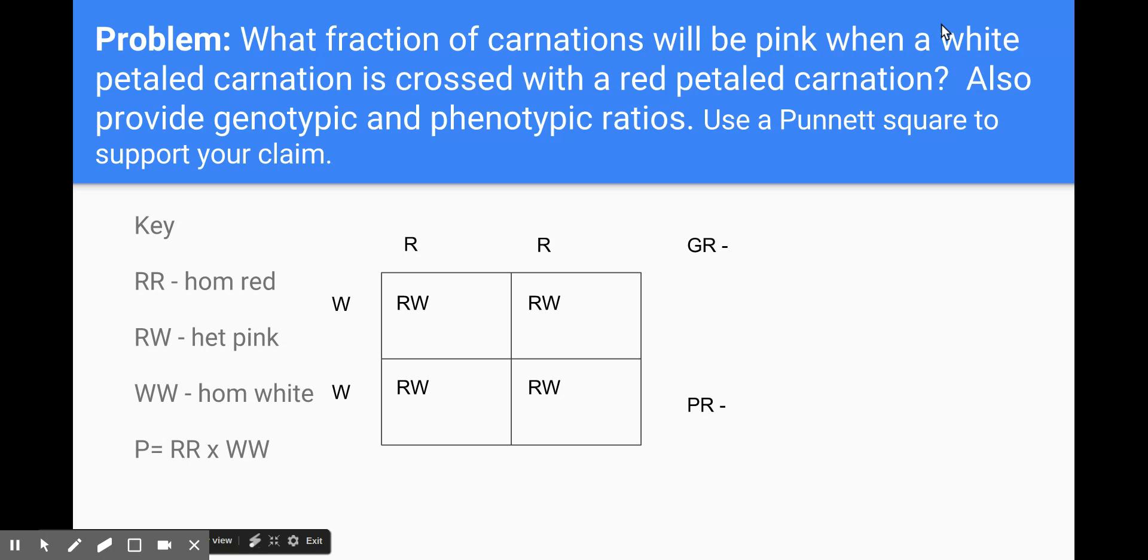Okay here we are with the next slide and a new question. This last question is what fraction of carnations will be pink when a white petaled carnation is crossed with a red petaled carnation. Also provide genotypic and phenotypic ratios and use your Punnett square to support your claim. This particular inheritance pattern in carnation plants is what we call incomplete dominance. We know that it's incomplete dominance because we're given some big clues in the first sentence of the problem stem.